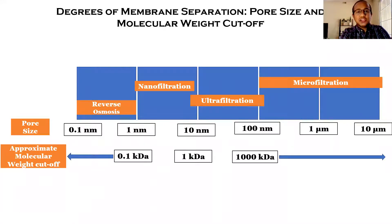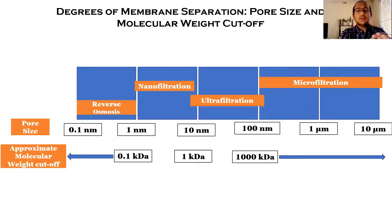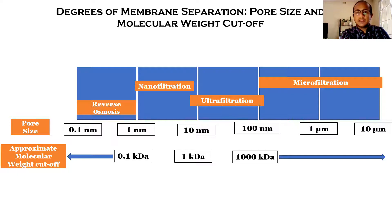Hi, everyone. In this video, I'm going to explain different types of membranes that are classified based on their pore size and molecular weight cutoff, which is the lowest molecular weight at which greater than 90% of a solute with a known molecular weight is rejected by the membrane. As we can see in the diagram here, there are four different types of membranes, and I will go over them in ascending order of pore size.